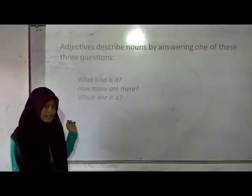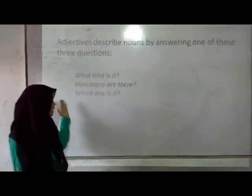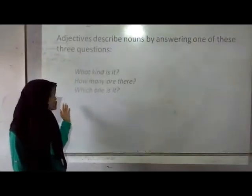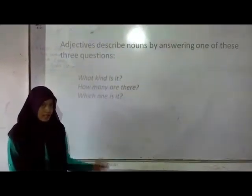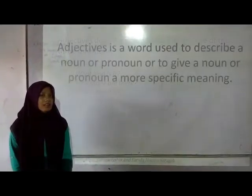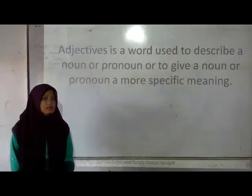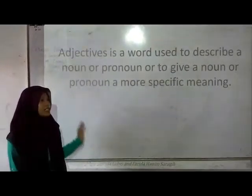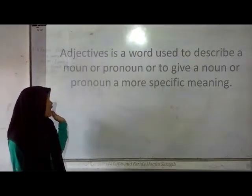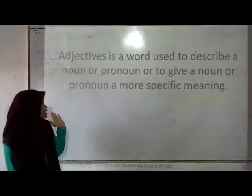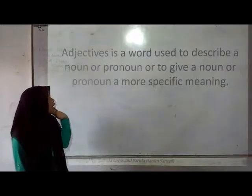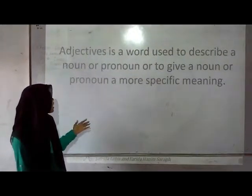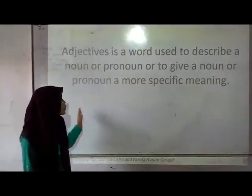For the first: what kind is it? For the second: how many are there? And the third: which one is it? The definition of the adjective is a word used to describe a noun or to make it more specific.